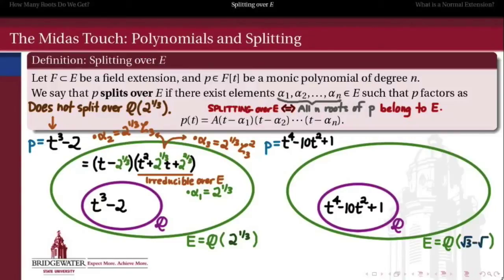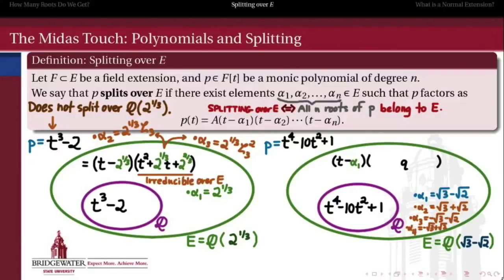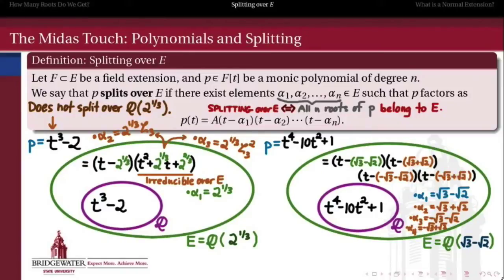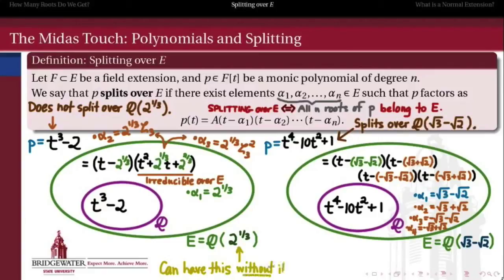Meanwhile, t⁴ - 10t² + 1, irreducible over the rationals — we extend to include √3 - √2. As we showed, the other roots of this polynomial all belong to that extended field as well. Therefore, when we factor out (t - (√3 - √2)), we can factor the remaining parts as (t minus the other roots) because all those other roots belong to E. Therefore, this polynomial splits over the field Q(√3 - √2).